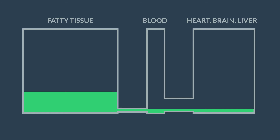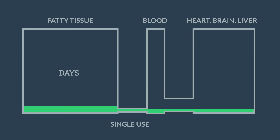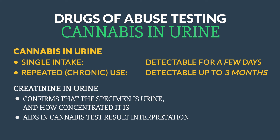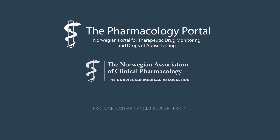The detection times for cannabis in urine vary from a few days following single use, up to three months following heavy chronic use. It is, however, important to distinguish between the periods of drug intoxication and drug detectability. Cannabis may be detected in urine for a long period after the drug effects have waned.